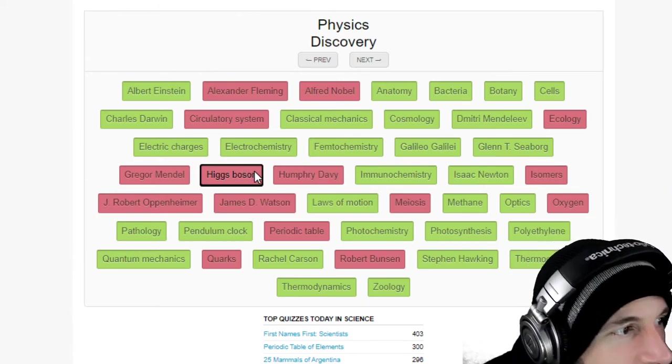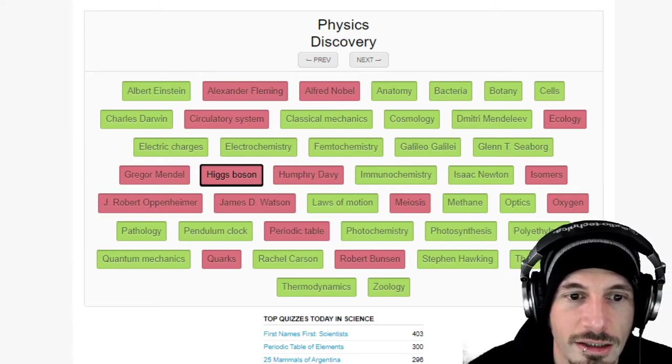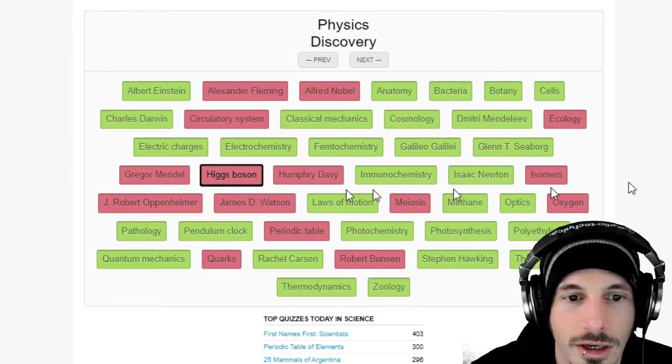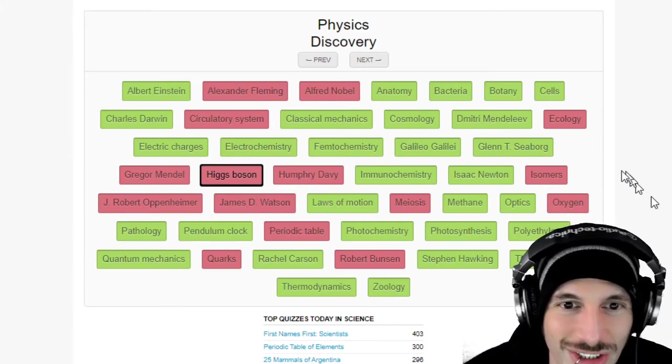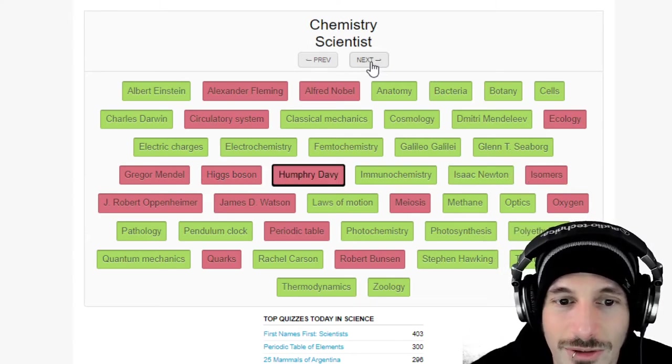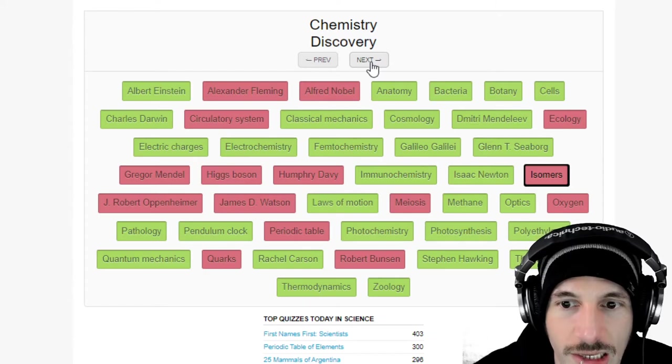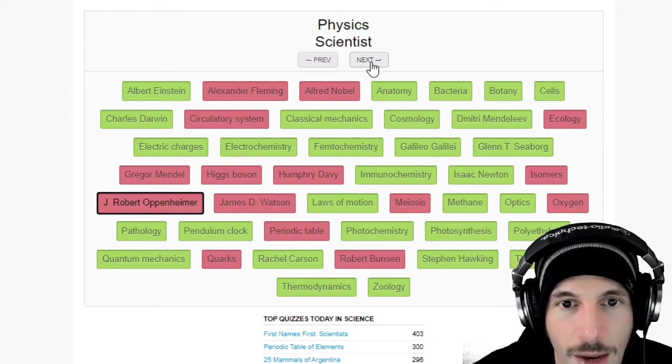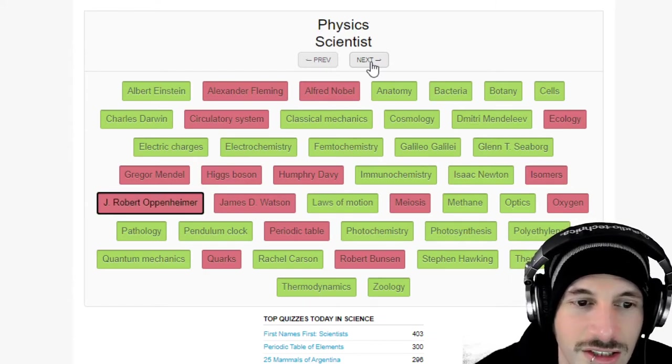Higgs, oh I thought they said Boson, I was like Higgs Boson is that like a hospital? Higgs Boson, I didn't read it correctly. Higgs Boson, I don't even know what that is though, I have no idea. Humphrey Davy, chemistry, I don't know that. Isomers, chemistry discovery, okay makes sense. Oppenheimer was a physics. See again I just think about him as a scientist. Watson was Sherlock's little buddy.